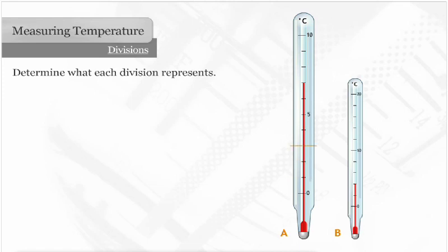The unmarked divisions each represent 1 degree. So the temperature reading on this thermometer is 7 degrees Celsius.